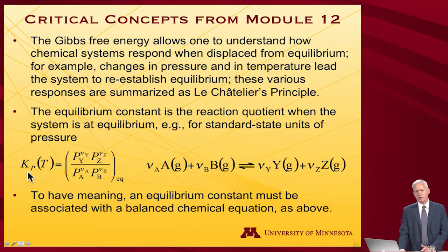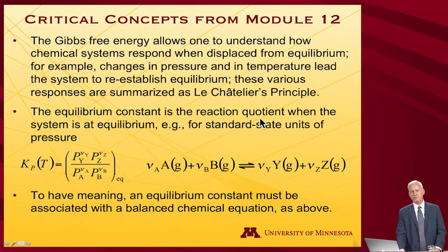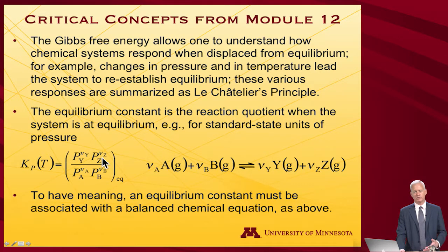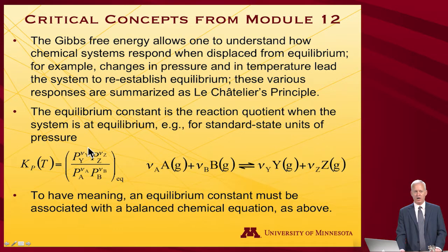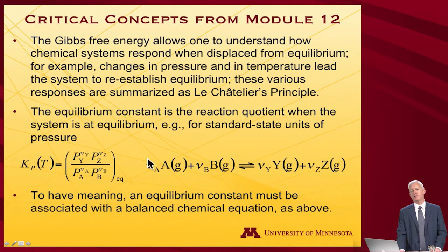The equilibrium constant itself is the reaction quotient when the system is at equilibrium. The reaction quotient is the concentrations, or pressures, or activities — whatever unit you're working with — of the products divided by those of the reactants raised to their respective stoichiometric coefficient powers, measured at equilibrium. This is a specific example using a pressure equilibrium constant for a specific chemical reaction.